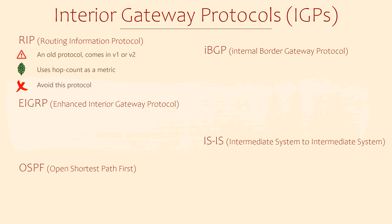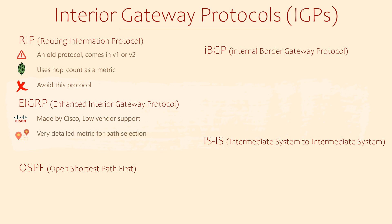One of the better options is EIGRP. Cisco designed EIGRP, so it was for Cisco routers only. They then allowed other vendors to use it, but few have taken them up on the offer, so we still generally consider it to be Cisco only. It has a very detailed metric for measuring network paths, looking at things like bandwidth, delay, link reliability, and link load. It puts these values into an algorithm which creates the metric. It's also very easy to work with.